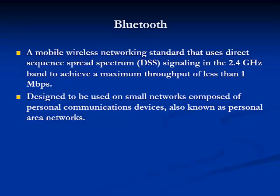Bluetooth is a mobile wireless networking standard that uses Direct Sequence Spread Spectrum, or DSS, signaling in the 2.4 GHz band to achieve a maximum throughput of less than 1 megabit per second. It is designed to be used on a small network composed of personal communications devices, also known as a personal area network.